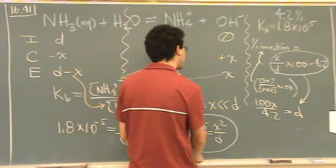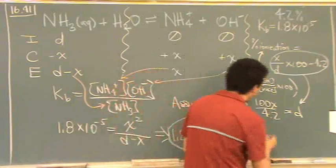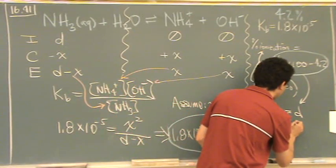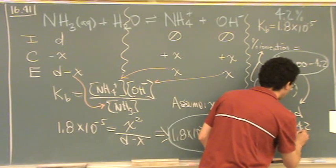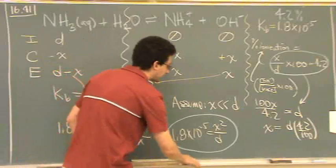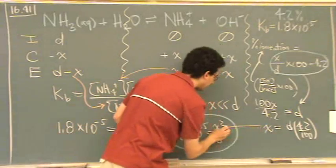I guess I should have solved for x, actually. x, the other way, is d times 4.2 over 100. I actually want to solve for x because... I'm just going to put x right there.